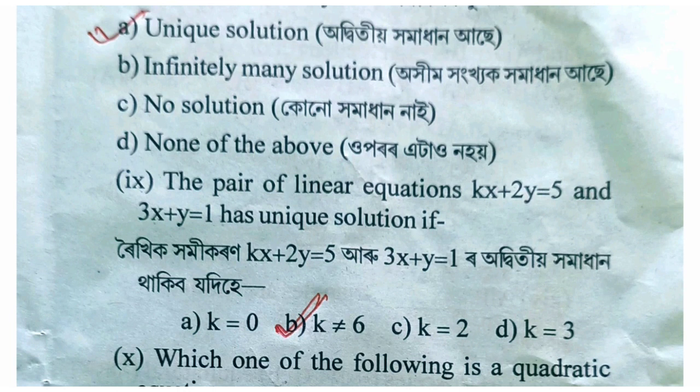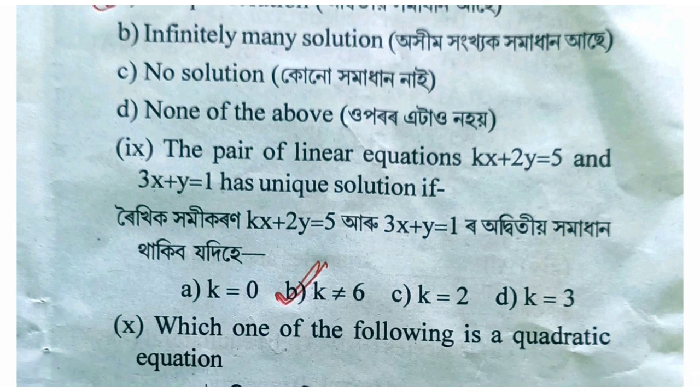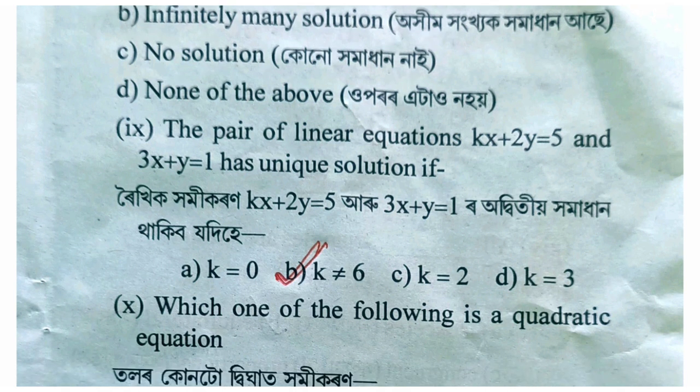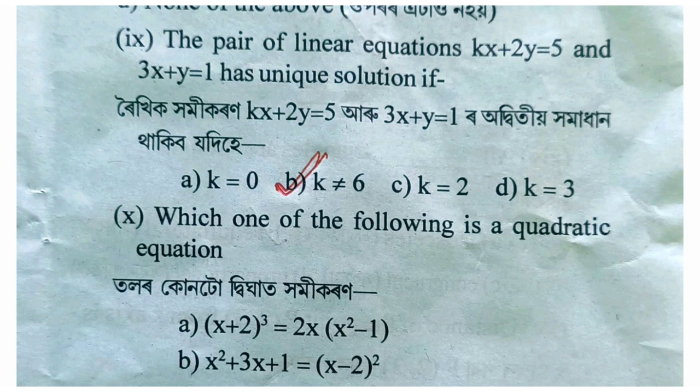The pair of linear equations kx plus 2y equal 5 and 3x plus y equal 1 has a unique solution if: k/3 does not equal 2/1, therefore k does not equal 6.